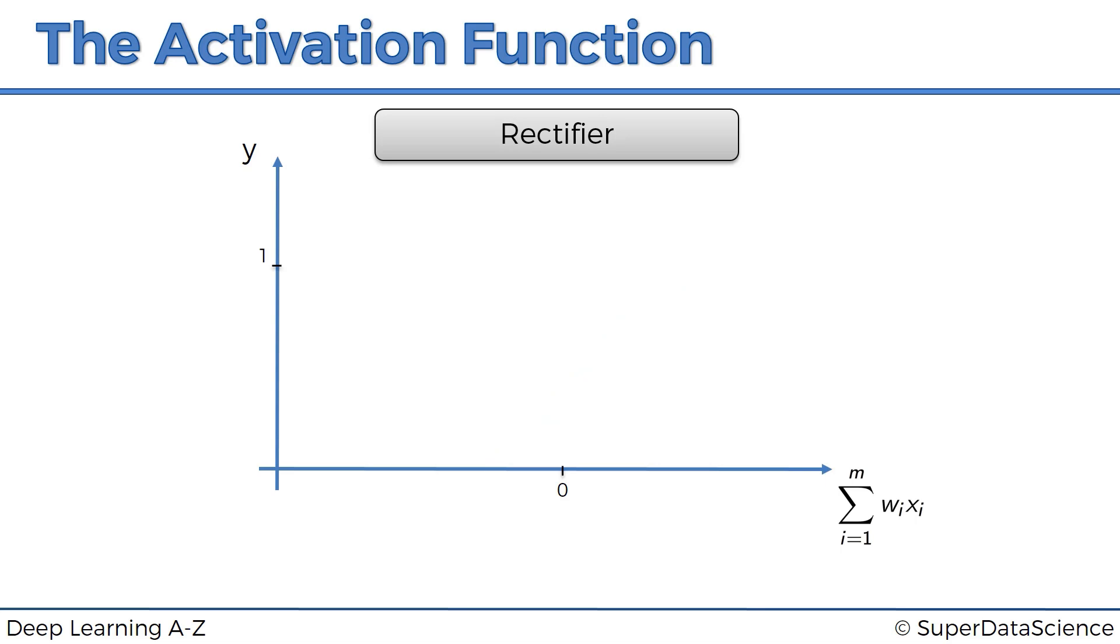And then we've got the rectifier function. Rectifier function, even though it has a kink, is one of the most popular functions for artificial neural networks. So it goes all the way to zero, it is zero. And then from there, it gradually progresses as the input value increases as well. We'll see that throughout the course in other intuition tutorials and in the practical side of the course. I will comment on this a bit more in a few slides from now. So just remember that a rectifier function is one of the most used functions in artificial neural networks.